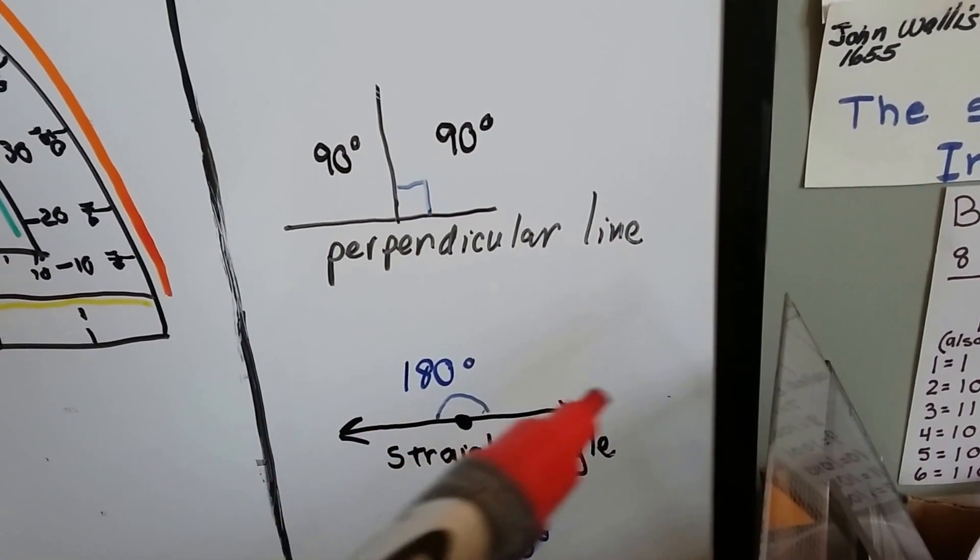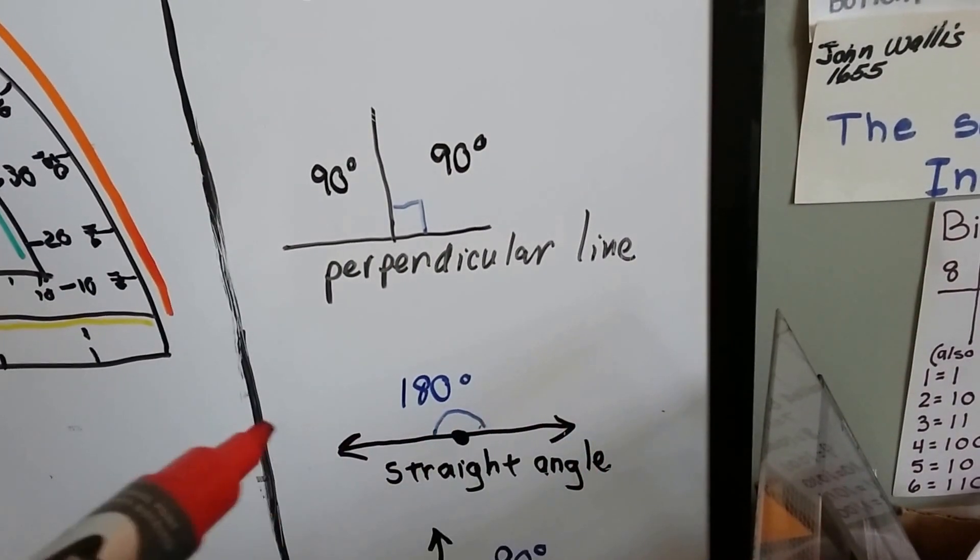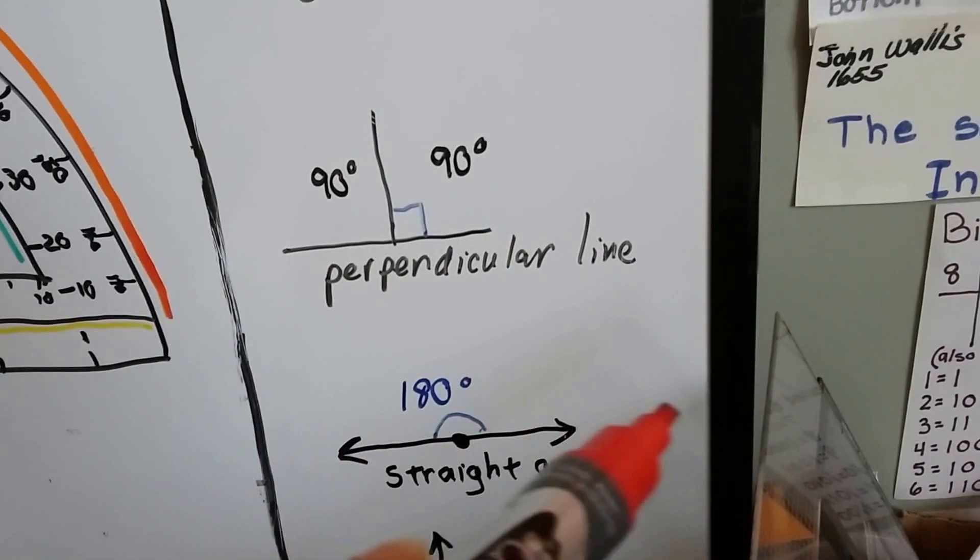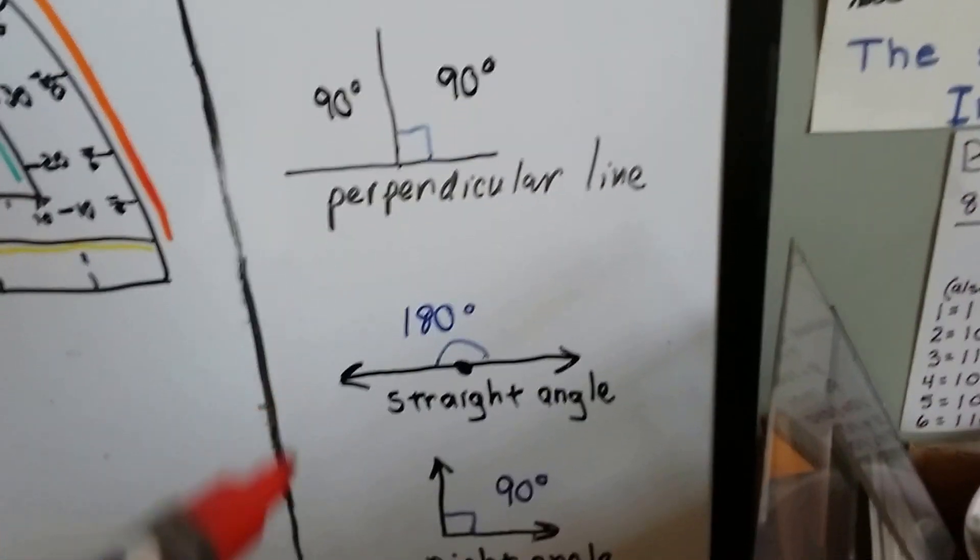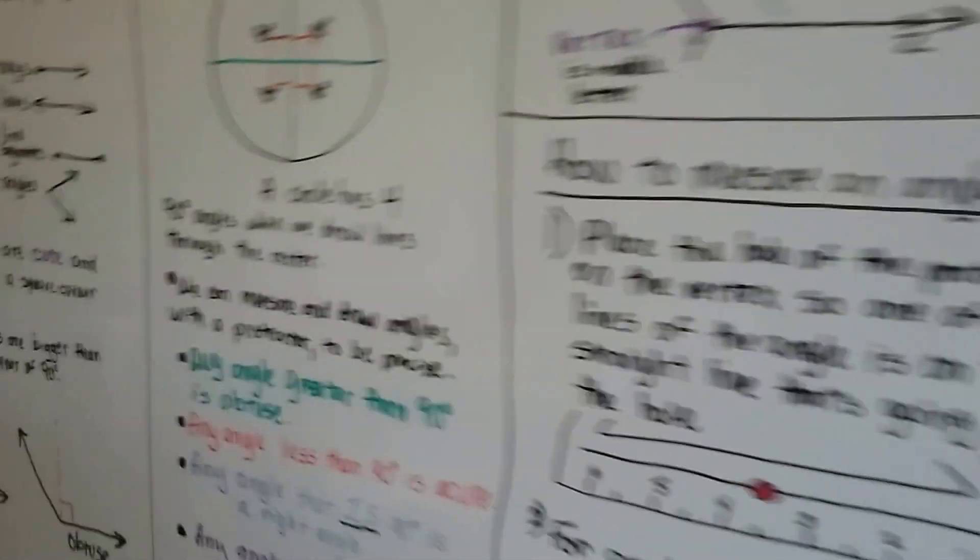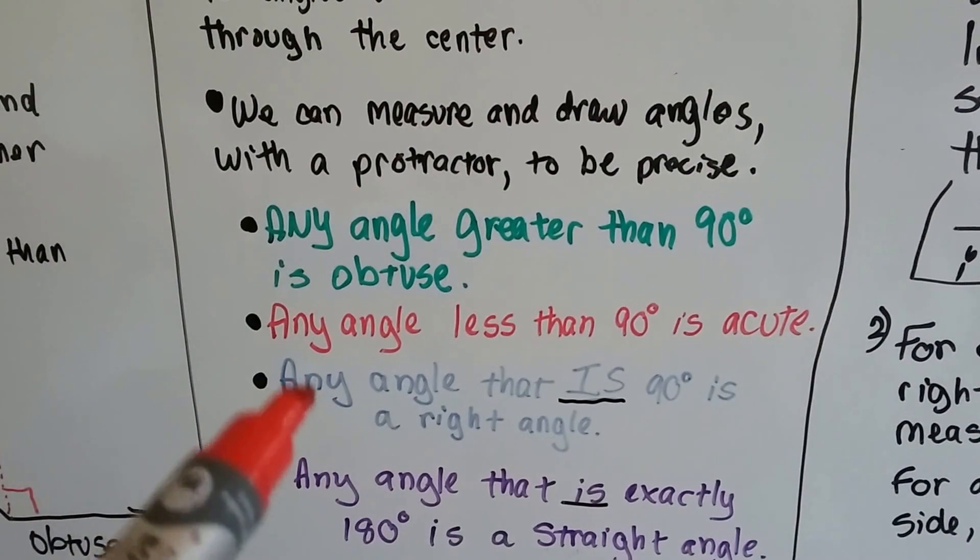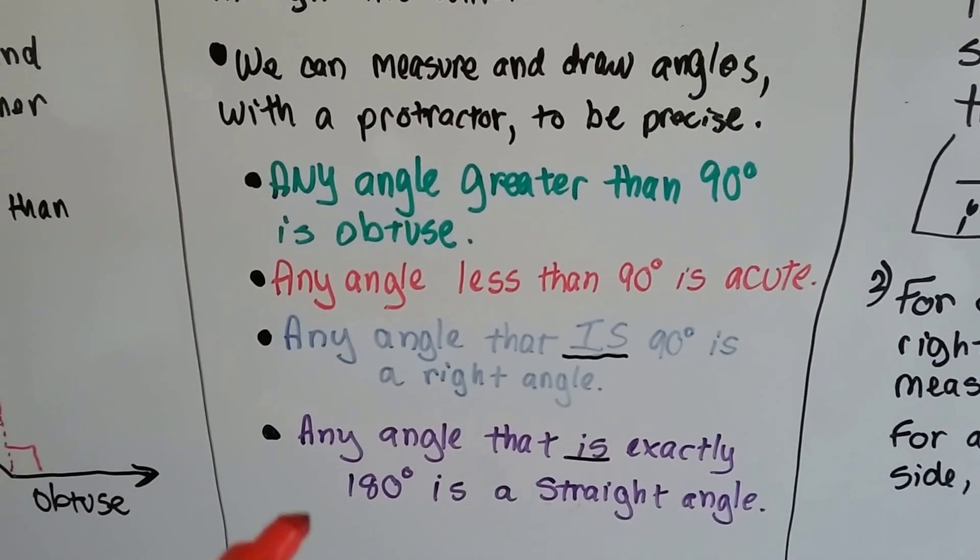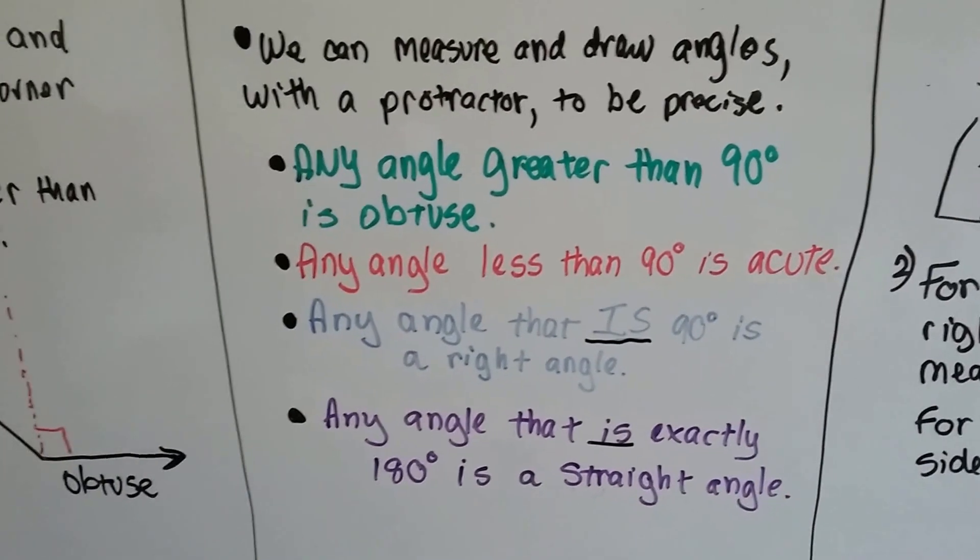Here's a straight angle. It's got two arrows at the end with a point for a vertex. But it's so open that it's going straight across like a straight line. And that is 180 degrees right there. See? Here's our right angle. Okay? So, any angle that is 90 degrees is a right angle. And any angle that is exactly 180 is a straight line is a straight angle.